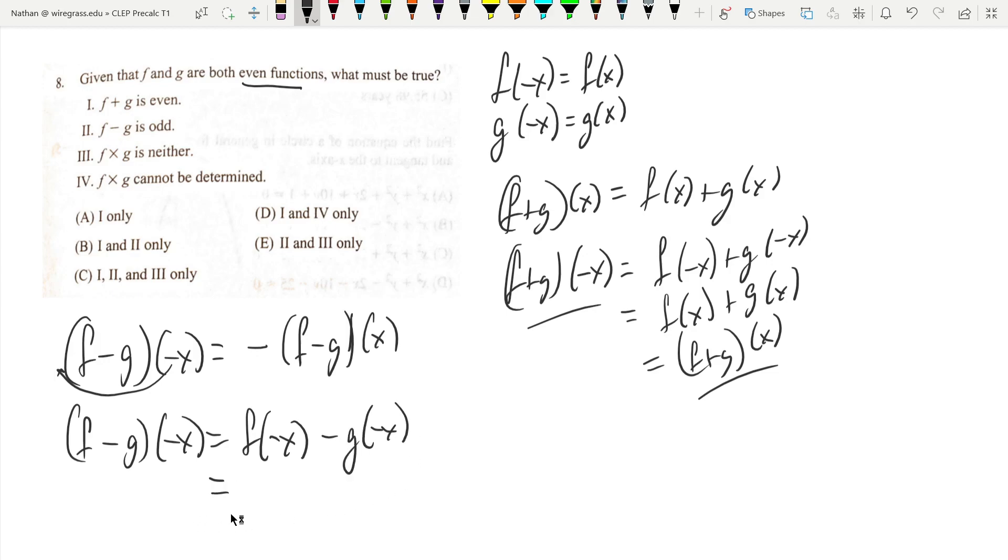Of course, f and g are even functions, so we have f of x minus g of x. But you can see that this equals f minus g of x. We do not get the negative pulled in front. In fact, this is an even function, so f minus g is not odd.